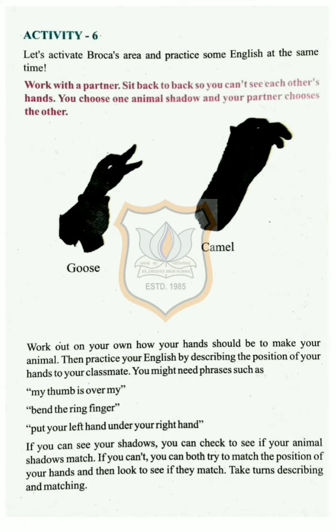You might need phrases such as: 'My thumb is over my...', 'bend the ring finger', 'put your left hand under your right hand.' If you can see your shadows, you can check to see if your animal shadows match. If you can't, you can both try to match the position of your hands and then look to see if they match.